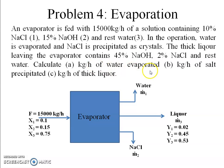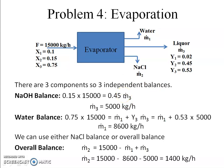There are three components — NaCl (component 1), NaOH (component 2), and water (component 3) — so we can write three independent equations. To identify where to start, we look for the component appearing in the fewest streams. Both water and NaCl appear in two outgoing streams. NaOH appears in only one incoming and one outgoing stream, so we start with the NaOH balance.